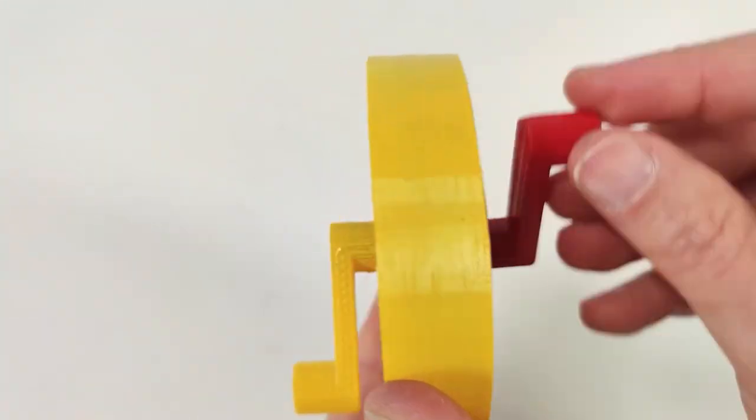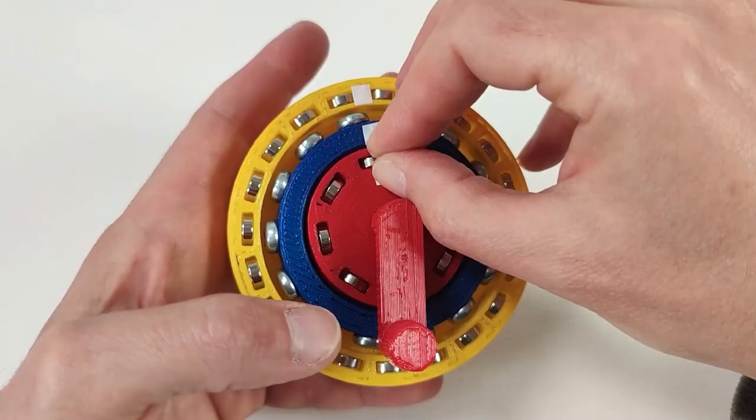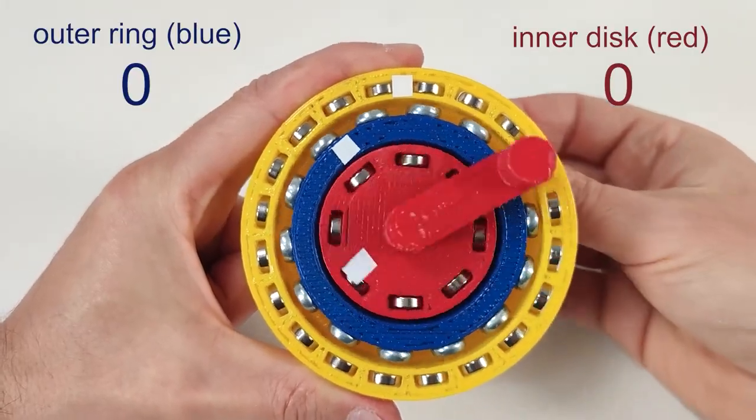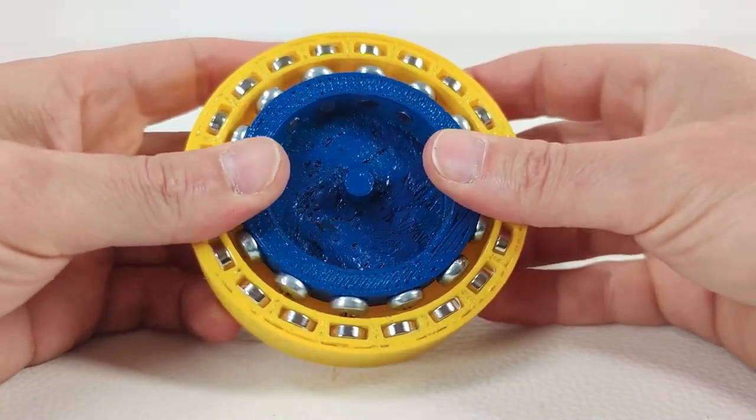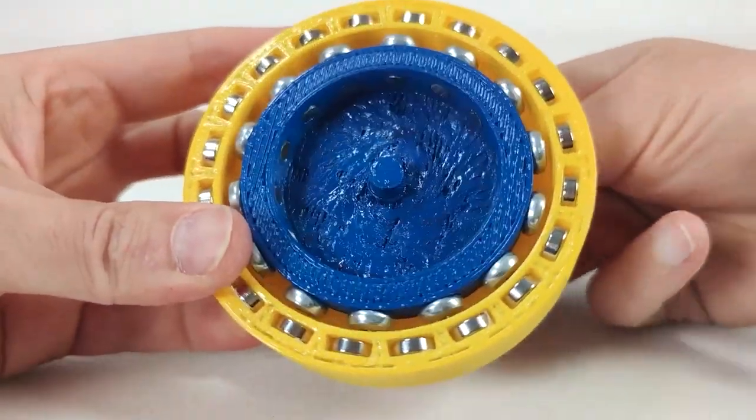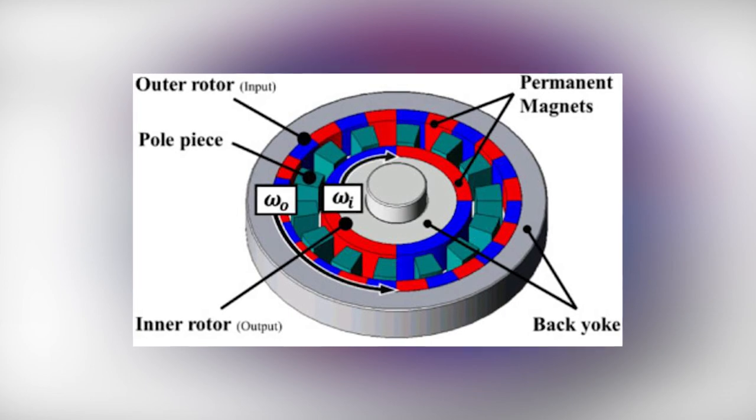How do magnetic gears work? The magnetic gear design consists of three concentric rotors and resembles mechanical planetary gearsets in many ways. The inner and outer rotors include permanent magnets and serve as sun and ring gears, respectively. A flux modulator that functions as a planet gear is positioned between them.